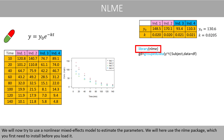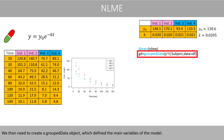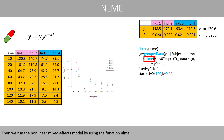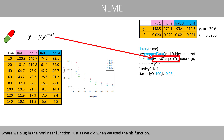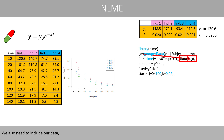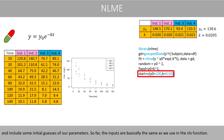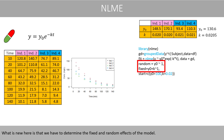We will now try to use a nonlinear mixed effects model to estimate the parameters. We will here use the nlme package, which you first need to install before you load it. We then need to create a grouped data object, which defines the main variables of the model. Then we run the nonlinear mixed effects model by using the function nlme, where we plug in the nonlinear function — just as we did when we used the NLS function. We also need to include our data and include some initial guesses of our parameters. The inputs so far are basically the same as we use in the NLS function. What's new here is that we have to determine the fixed and random effects of the model.